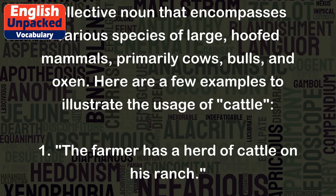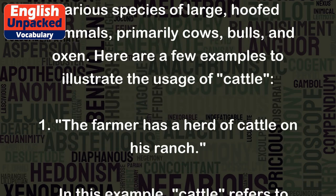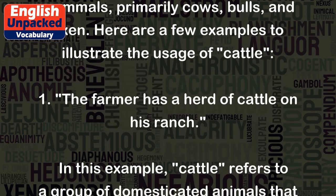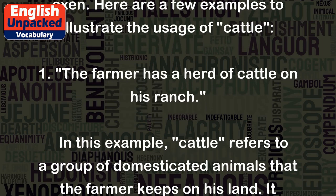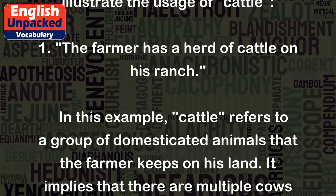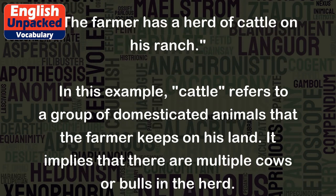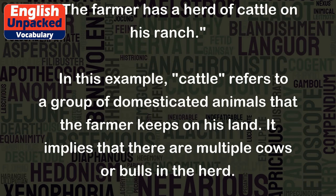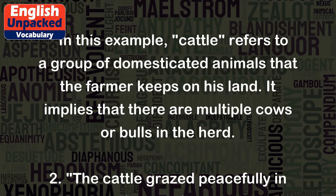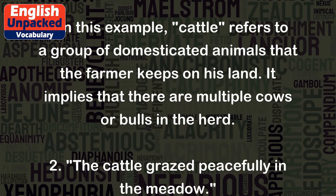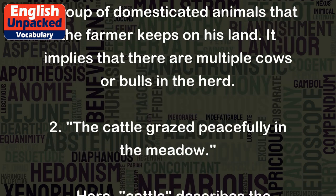Here are a few examples to illustrate the usage of cattle. The farmer has a herd of cattle on his ranch. In this example, cattle refers to a group of domesticated animals that the farmer keeps on his land. It implies that there are multiple cows or bulls in the herd.